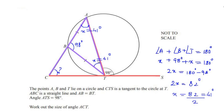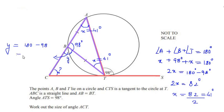Since ABC is a straight line, the angles add up to 180 degrees. The other part of angle B — let's call it y — is equal to 180 minus 98 degrees, which gives y = 82 degrees.